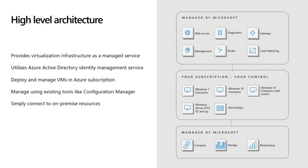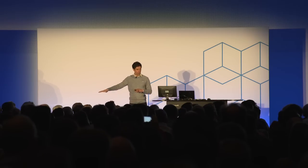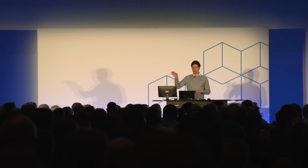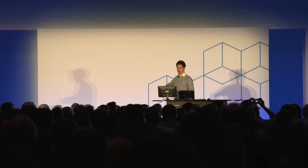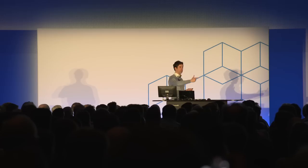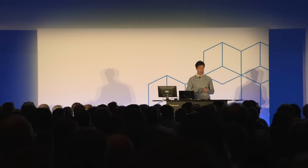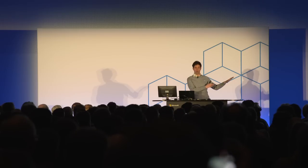Looking at the high-level architecture: there are three sections on the right. The bottom one — Managed by Microsoft — covers compute, storage, and networking; that's just Azure IaaS, nothing new. On the top right, you can see six boxes: Web Access, Management, Diagnostic. Those are the roles you'd normally install for an on-premises RDS environment — you'd need to purchase hardware, install Windows Server, install roles, domain join them, manage them, expose them to the internet, troubleshoot. All of this is now a service managed by Microsoft.